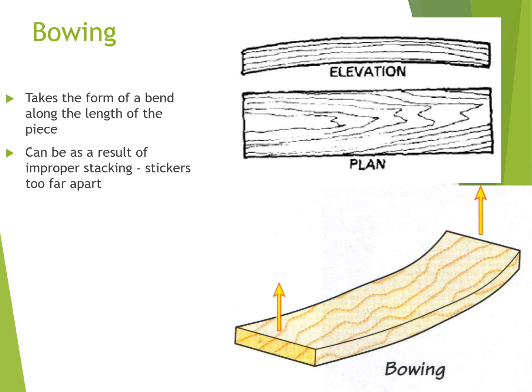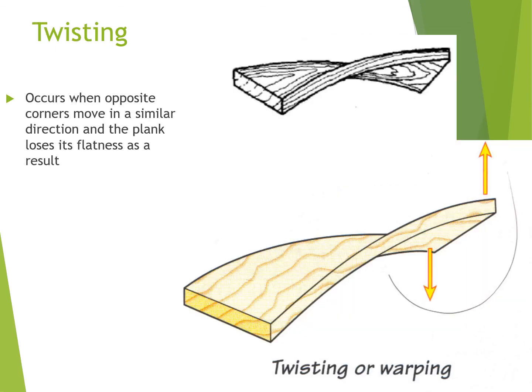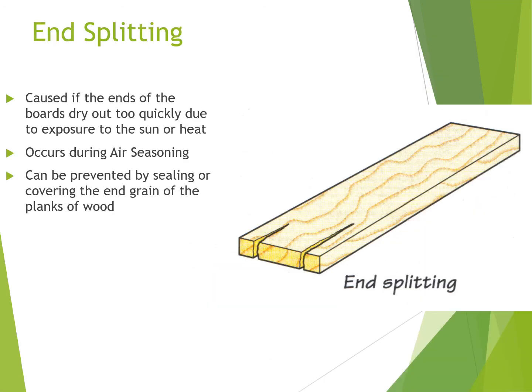Bowing is again caused by incorrect stacking. Twisting occurs when opposite corners move in a similar direction and the plank loses its flatness — this can be the result of incorrect stacking or not level ground. End splitting is caused when the ends of the boards dry out too quickly — if they're not painted, or if there isn't a rag drawn over the ends to prevent them drying out too quickly.